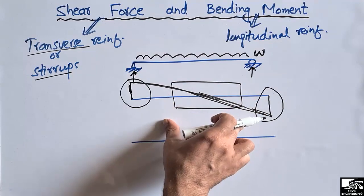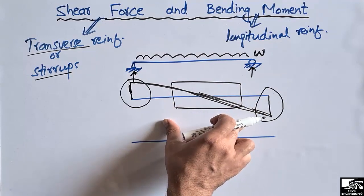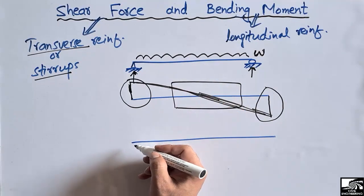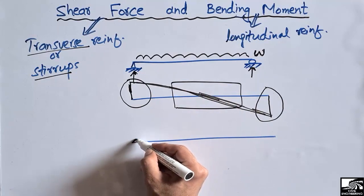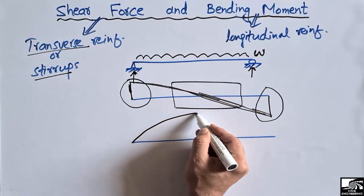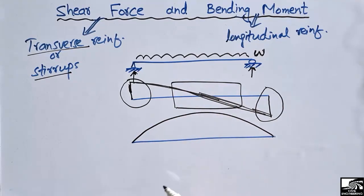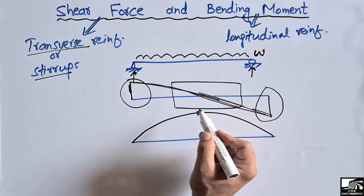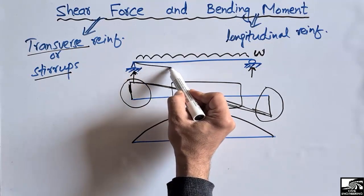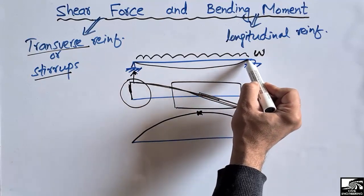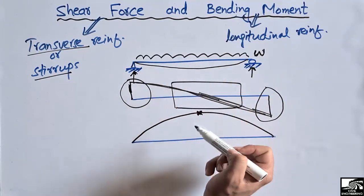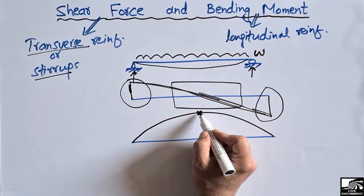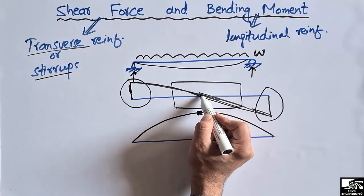Now let's look at the bending moment diagram. The bending moment diagram for such a beam will look like this. The maximum bending moment can be seen here at the middle, because the beam deflects and there is no support at the middle, so it shows maximum bending moment at the point where the shear force is zero.